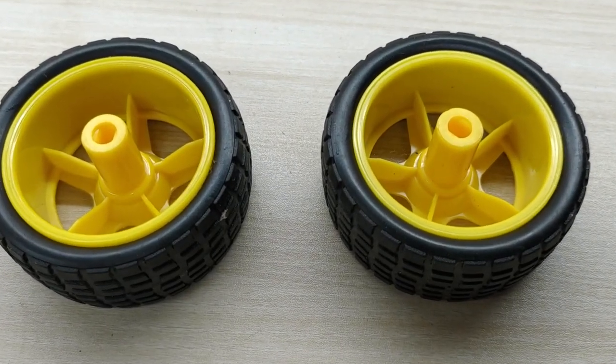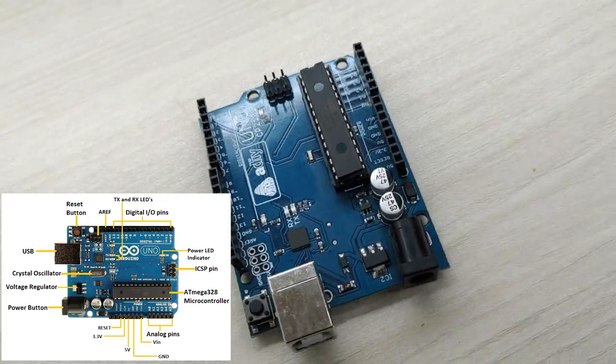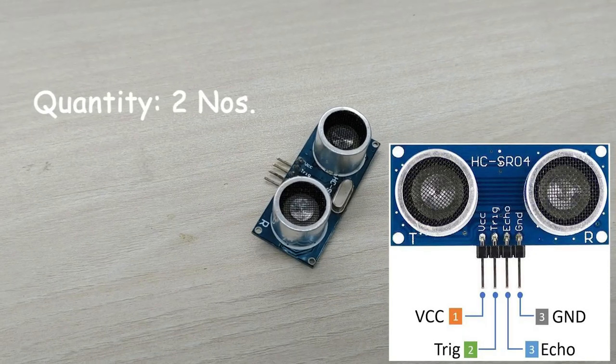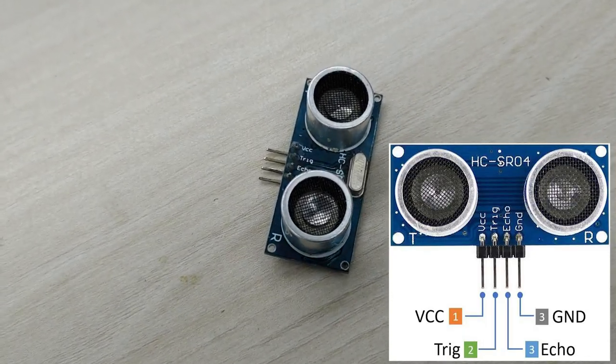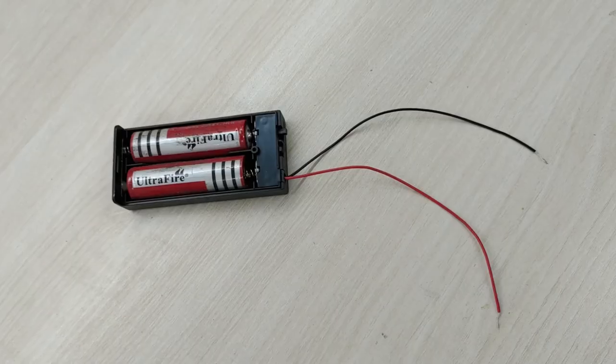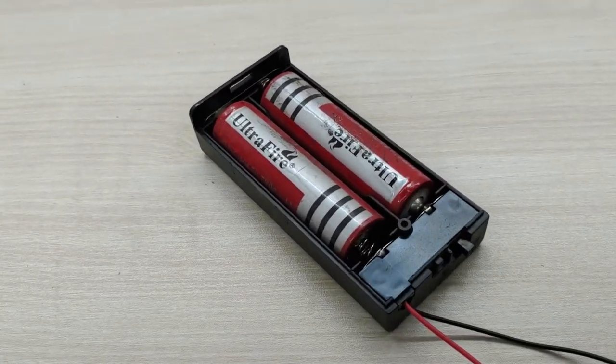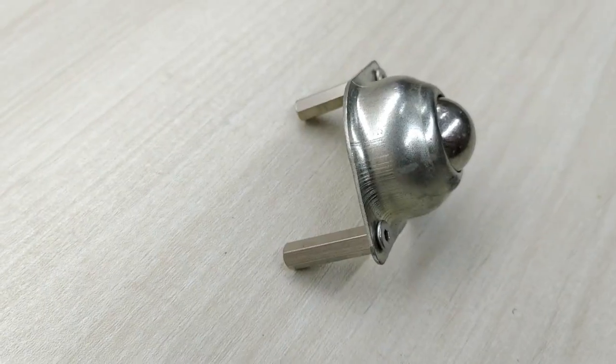two numbers of 65mm diameter wheels, Arduino Uno board, L298N motor driver module, two numbers of HCSR04 ultrasonic sensors, a battery pack with two numbers of 18650 3.7 volt batteries and a caster wheel.